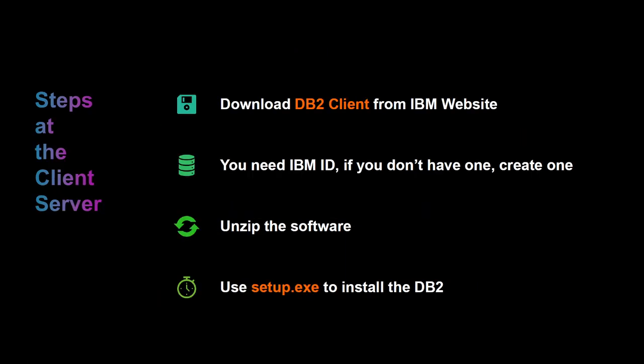We need to download the DB2 client from the IBM website. You have to have an IBM ID — if you don't have one, sign up using your personal or work email account to download the DB2 client. Once the DB2 client is downloaded, unzip that software and then use the setup.exe — you will find it wherever you have unzipped the software. Use setup.exe to install the DB2 client.